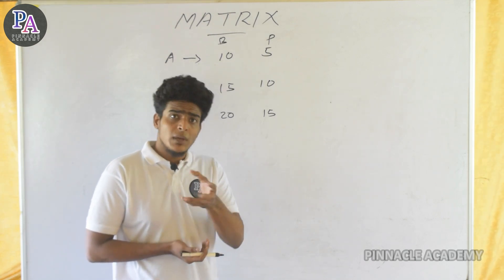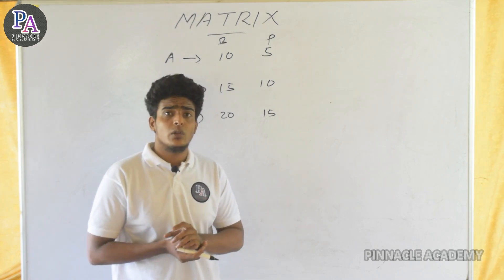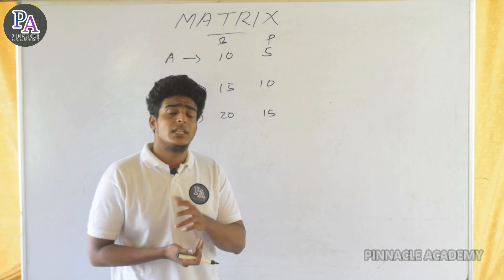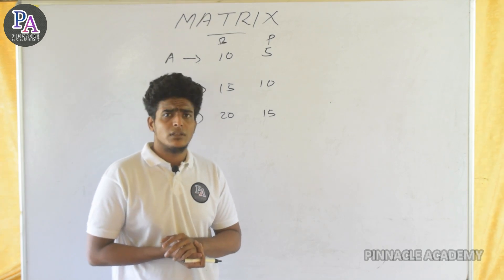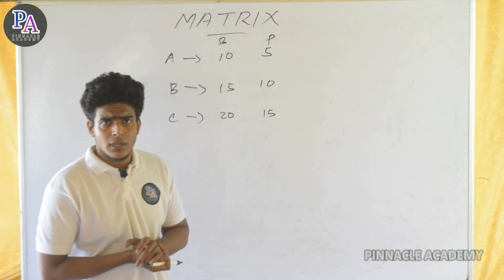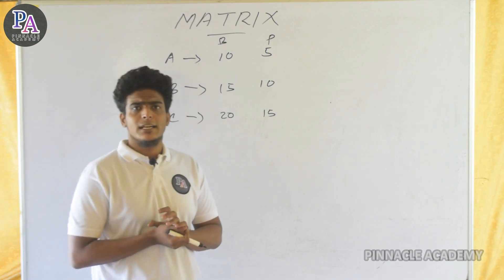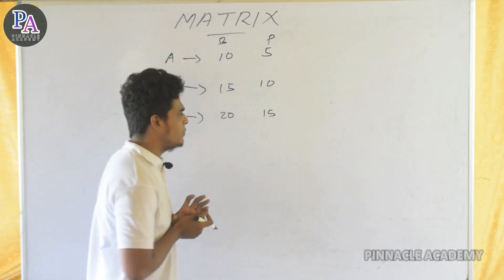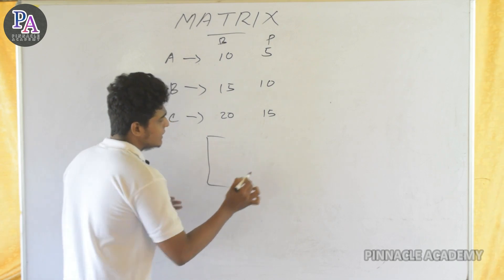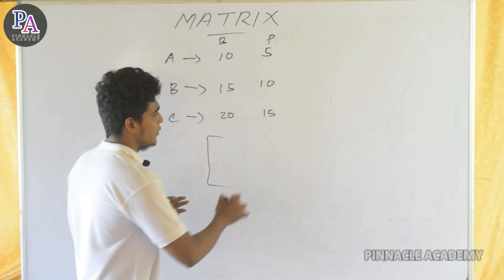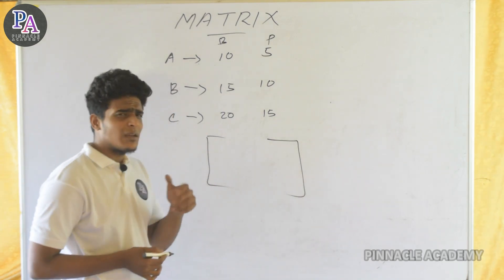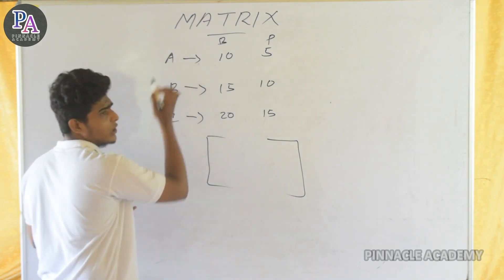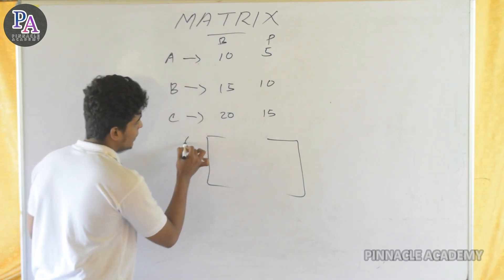We already said that the numbers are arranged in a rectangular array. What is the matrix? Why is it arranged in a rectangular array? It looks like we have a bracket. If you have that type, you will find the numbers arranged in a matrix.